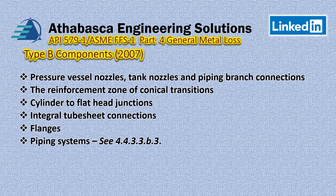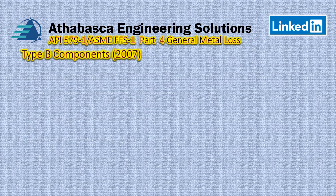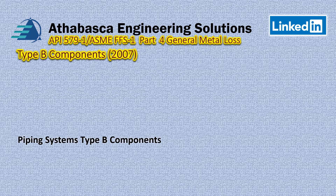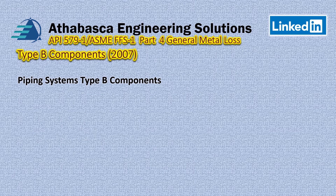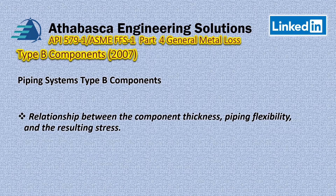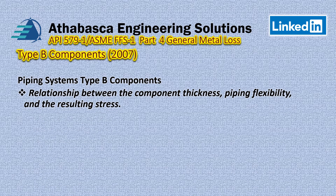There's a section in 2007 called 4.4.3.3 B3 that we can get into as well. The piping system B components discussion begins with the point that Type B systems apply when there's an interrelationship between the component thickness, the piping flexibility, and the resulting stresses — because if a pipe is more flexible the stresses can drop, and vice versa, and the component thickness has an effect.